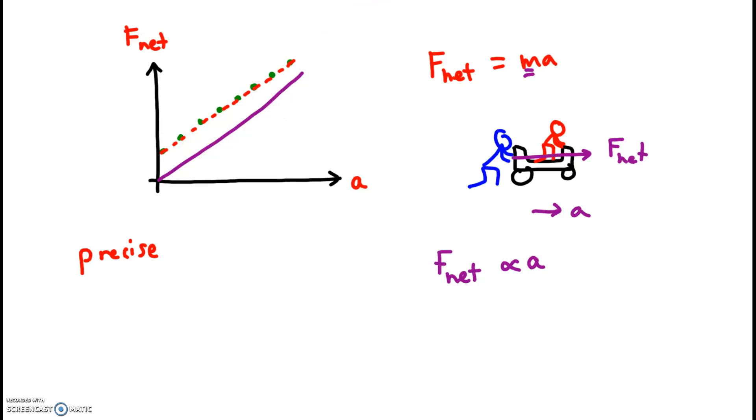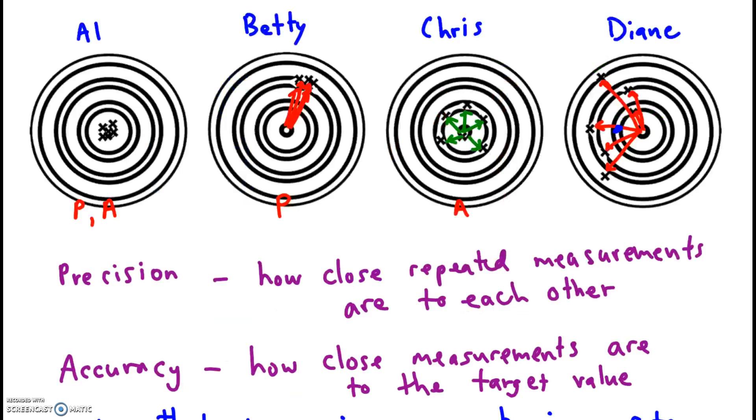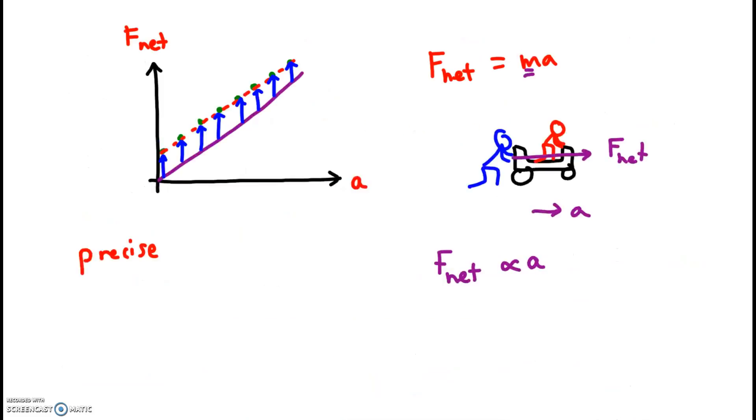But is the data accurate? Well, this first data point was too high. This one was too high. Every single data point was off by the same amount. So what is that like? Which target? It's Betty. See that? Every single data point is off by the same amount. It's very consistent, but it's not accurate. So this is not accurate data.